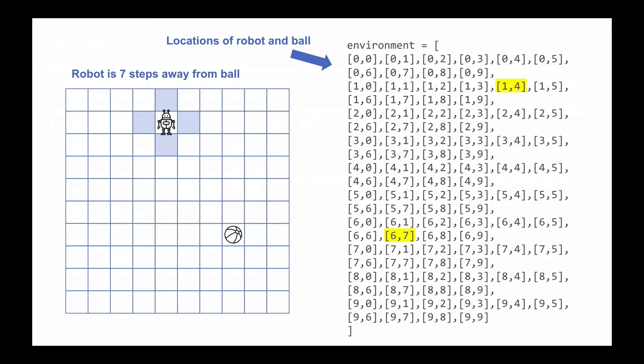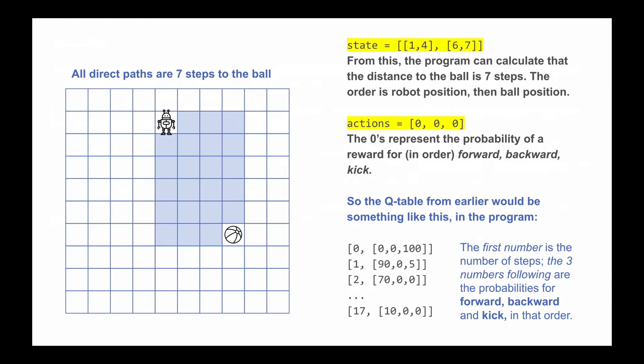In the state shown here, the robot can kick or move to one of the marked squares. We're not allowing diagonal moves, so the two green squares are closer to the ball (forward) and the two blue squares are farther from the ball (backward). The robot can choose any path to the ball, and any step moving toward the ball is called forward. In this simple example, at this distance, the shortest path is always seven steps. Moving one step closer would be six steps; moving one step farther would be eight steps.